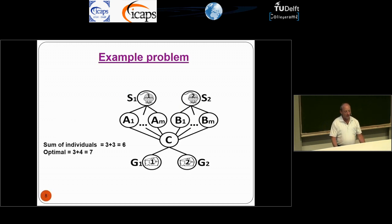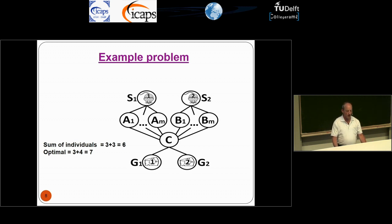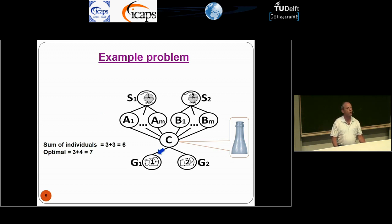Here is our example problem. We have two agents — those mice at S1 and S2 — and they want to get to their pieces of cheese. If each of them goes individually, the sum of individual costs is six, because everyone can get to their goal location in three moves. However, there is a bottleneck at location C at time step two. So the optimal solution is that one of them has to wait and let the other pass — the optimal solution here is seven. Let's see how CBS solves it.